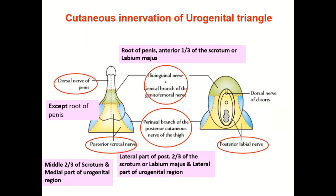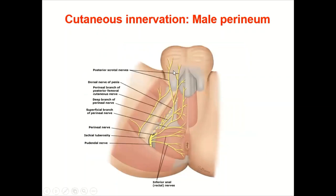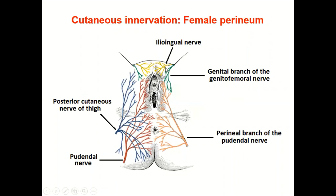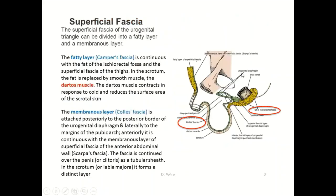In the male perineum we have the posterior scrotal nerves, perineal branch of the posterior femoral cutaneous nerve, perineal nerves, ilioinguinal nerve, genital branch of the genitofemoral nerve, and the perineal branch of the pudendal nerve. In the female perineum, similarly the posterior labial nerves and branches of the internal pudendal nerve are present.